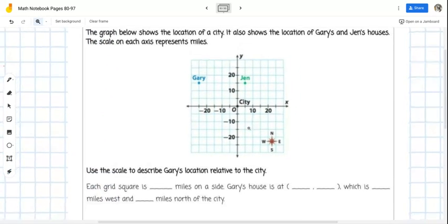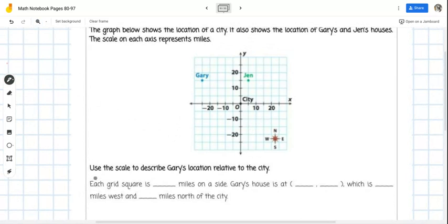Let's take a look and see if we can answer some of these questions. Use the scale to describe Gary's location relative to the city. So this is Gary's location. Let's see if we can find the ordered pair that represents Gary's spot. If I look here on the x-axis, he's at negative 25. And on the y-axis, his house is at positive 15. Where those points converge is where Gary's house is located.